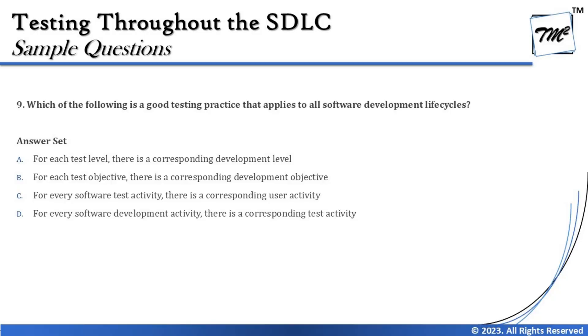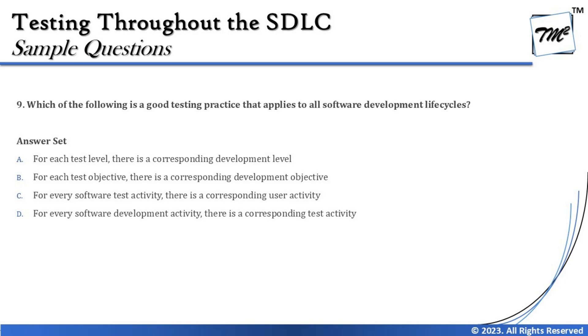Option A says for each test level there is a corresponding development level. That's actually the other way around — for every development activity there should be a corresponding testing activity. Option B says for each test objective there is a corresponding development activity. Again, this is also the opposite. There is no such rule that every test objective must have a corresponding development objective.